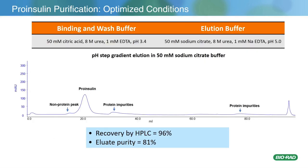These are the final optimized conditions for proinsulin purification. Binding and wash was 50 millimolar citric acid, 8 molar urea, 1 millimolar EDTA at pH 3.4, and the elution buffer was pH 5. Initially a salt gradient was tried, but a pH step elution was better suited to remove other protein impurities. All the proinsulin comes out in a single pH step at pH 5. Recovery was 96% by HPLC, and the eluate purity was found to be 81%.